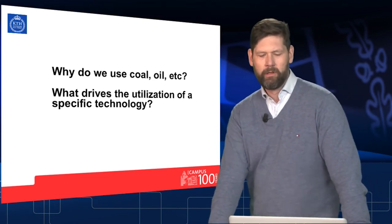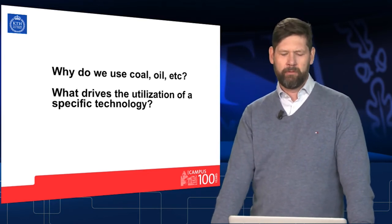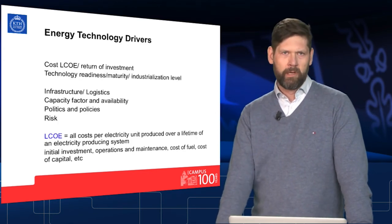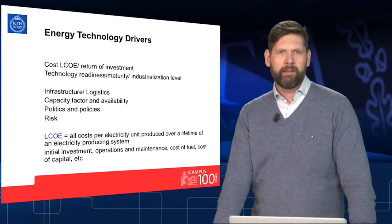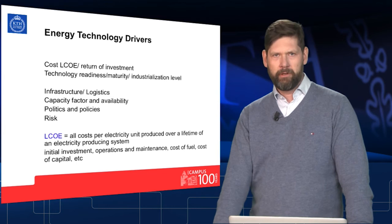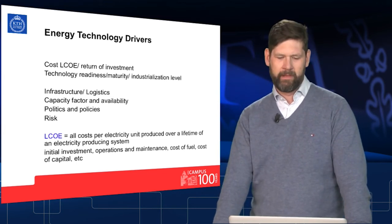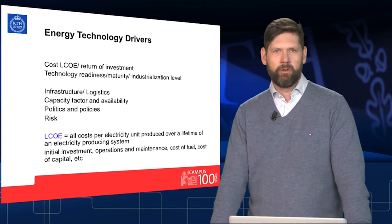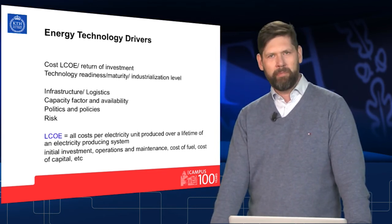Now, why do we still use oil, coal, etc.? What is the real driver of the utilization of a specific technology? First and foremost, the driver is cost — we call it levelized cost of electricity, which is the cost a unit of electricity needs to cover over the lifetime of a power plant. Other factors include technology readiness and maturity, infrastructure questions like power transmission lines, and political issues, such as China's investment in PV technology to become a technology leader.